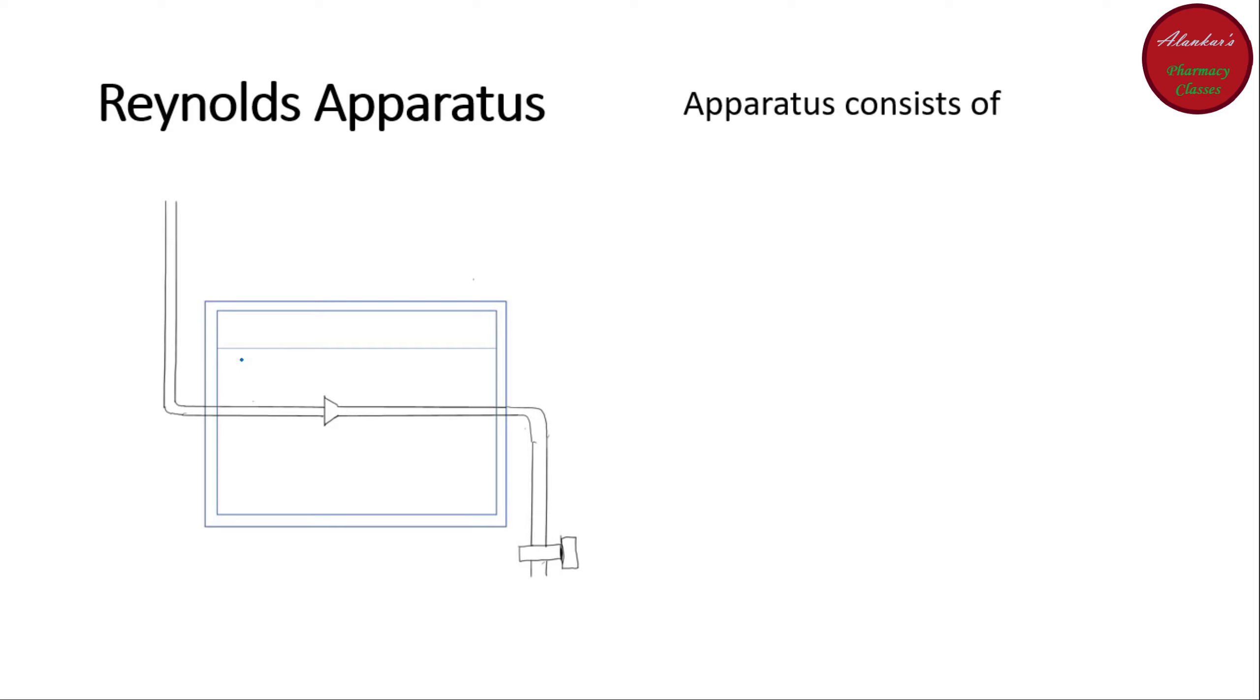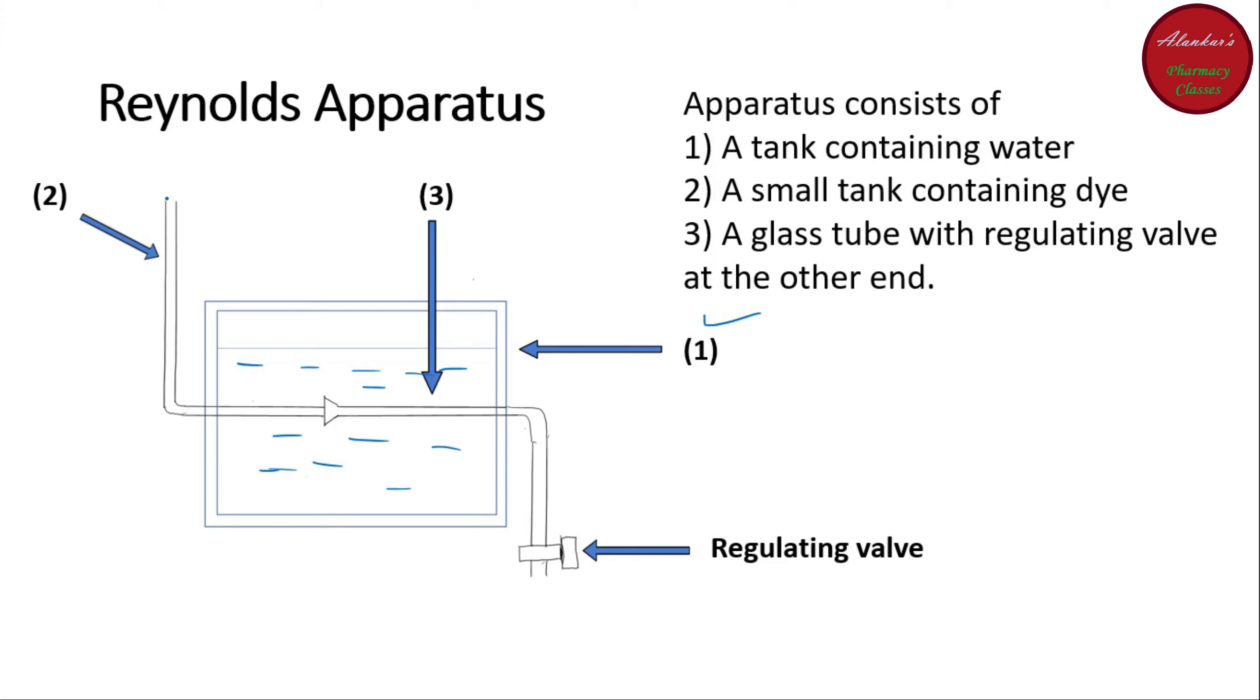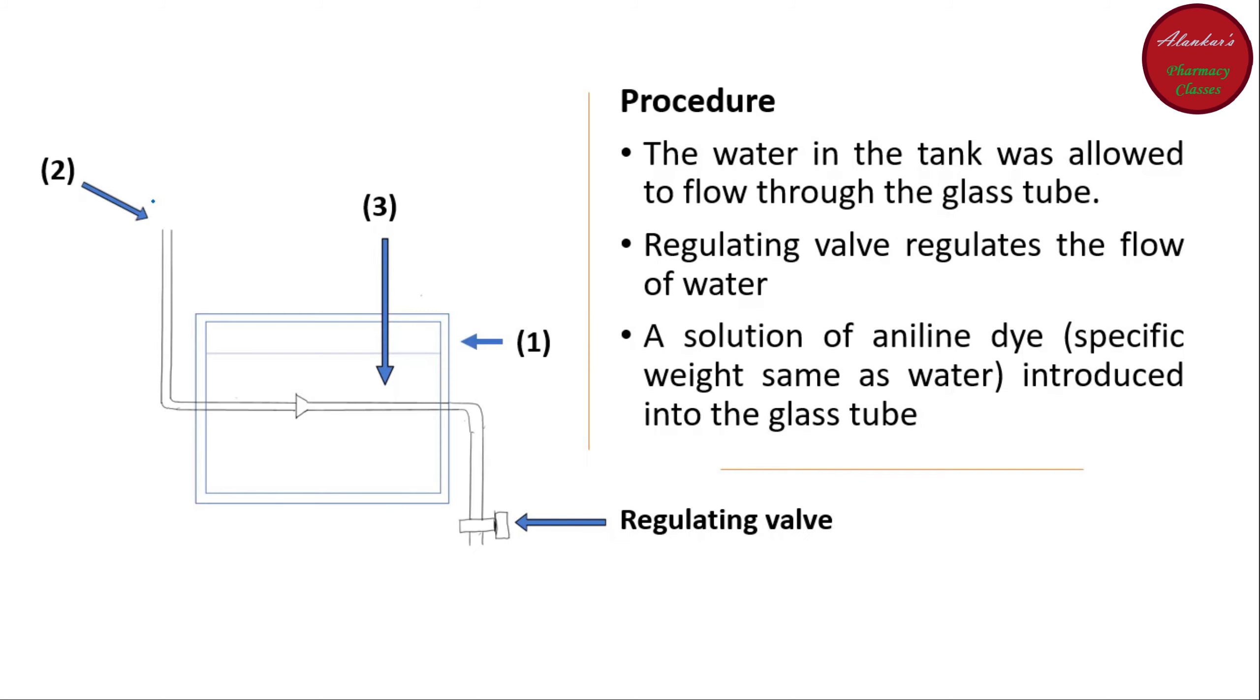As you can see here, there is a tank which contains water. This is a tank of water. And there is another tank, a small tank that containing a dye. Here there is another tank which contains a dye. And there is a glass tube. Here you can see this is a glass tube which is transparent enough so that the flow of fluid can be easily seen through it.